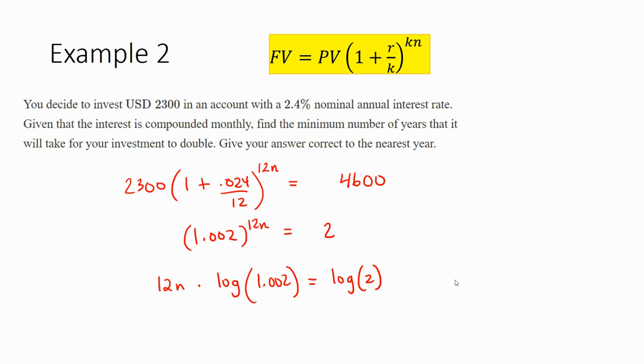So that's the only way to get exponents out. So the 12N comes out in the front times log of 1.002, which came from doing 1 plus 0.024 divided by 12. And then that's equal to log of the other side, log of 2. So you need to take log of both sides. And what that does is it makes the 12N come out of the power and into the very front.